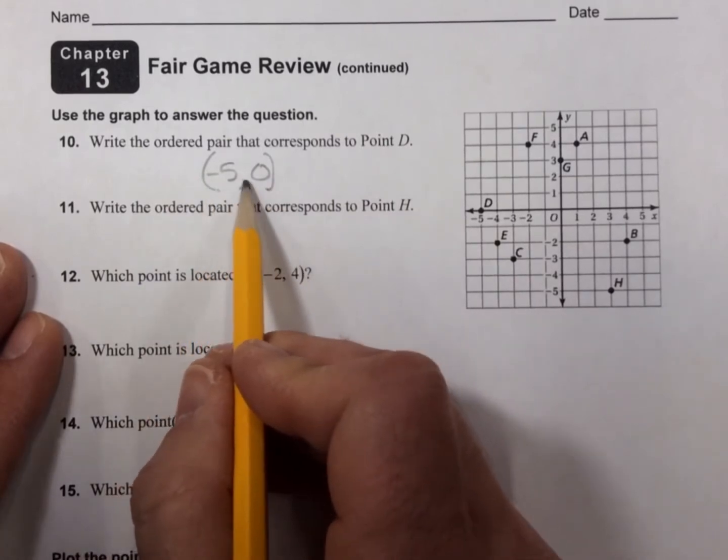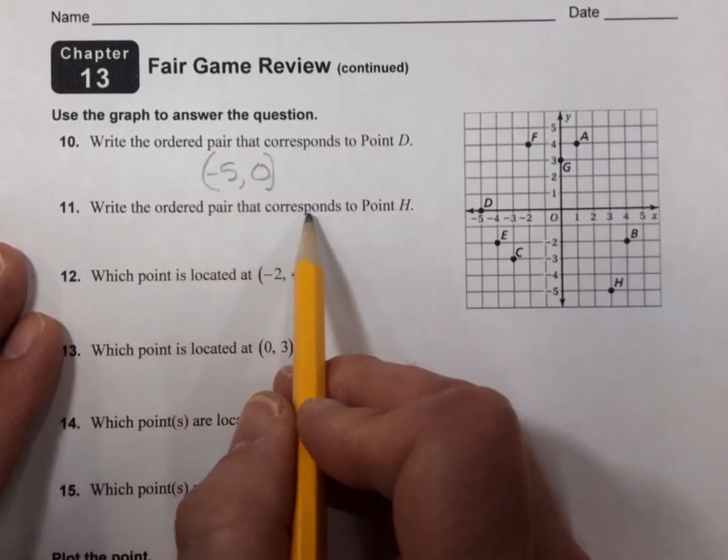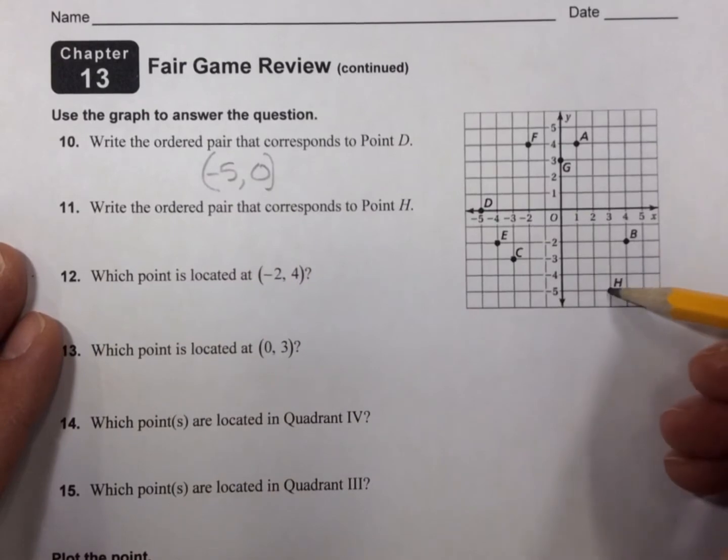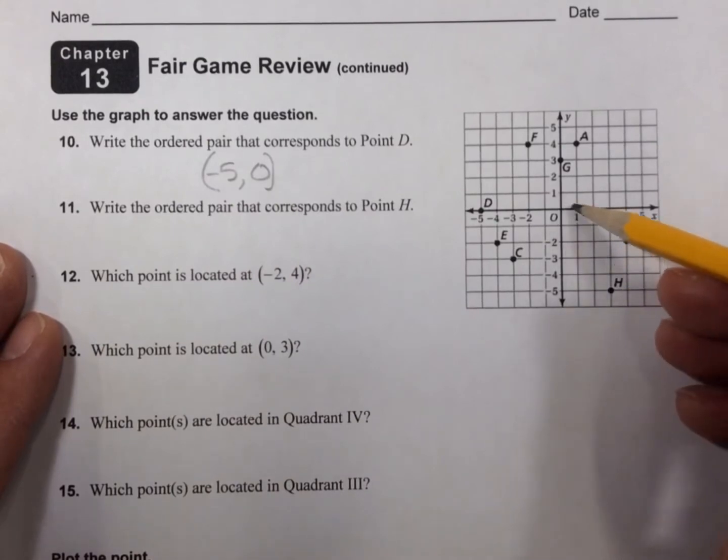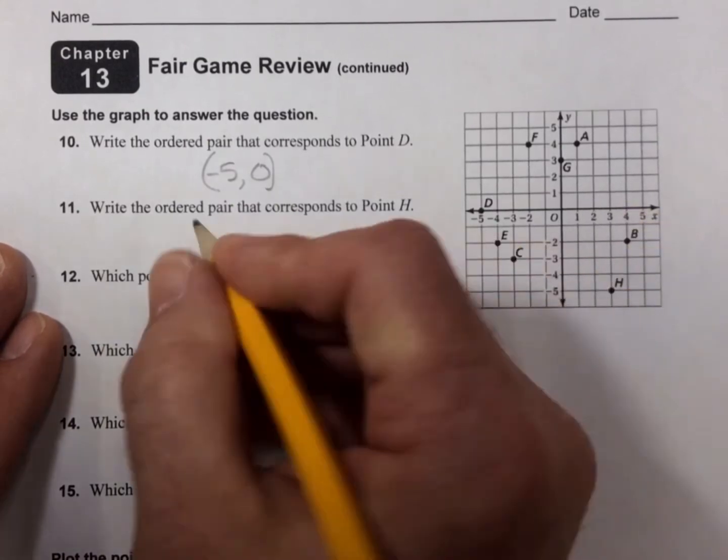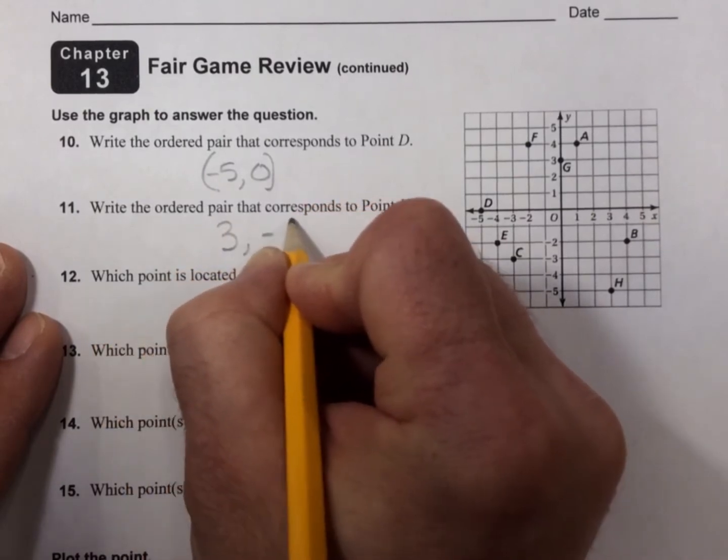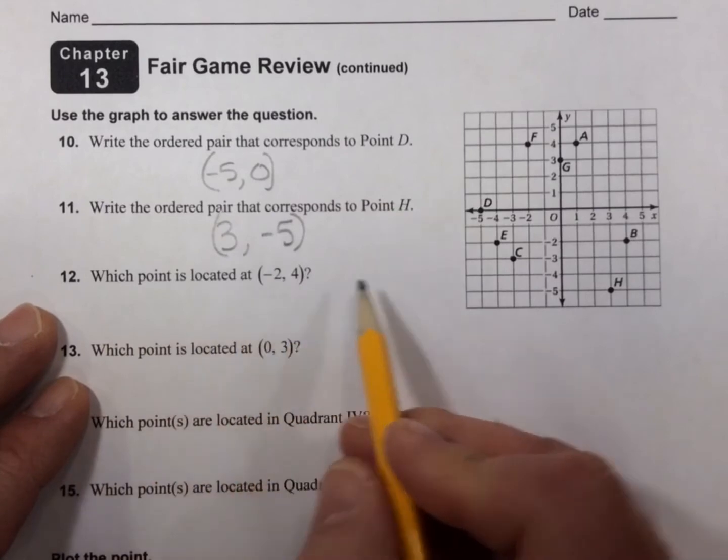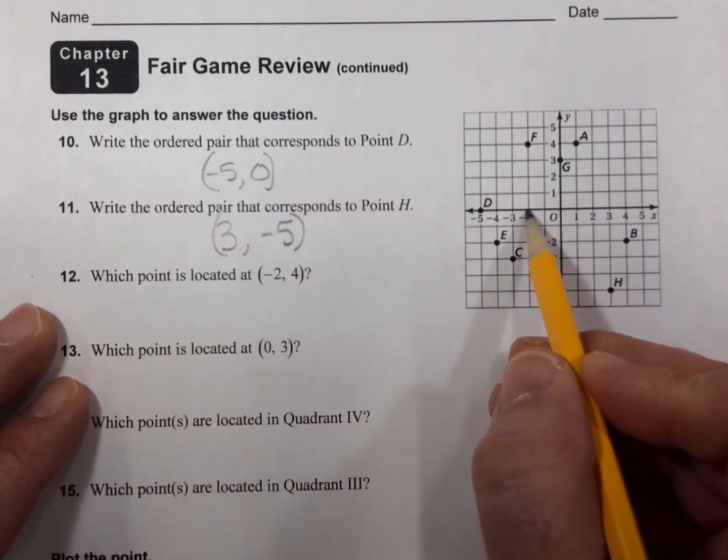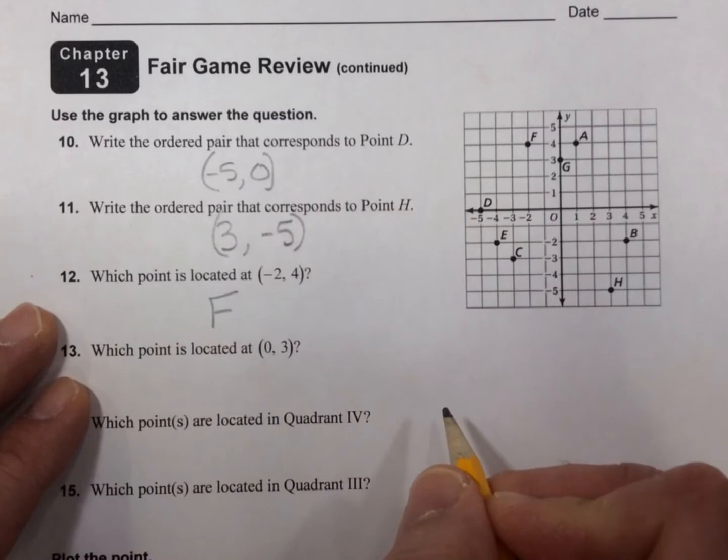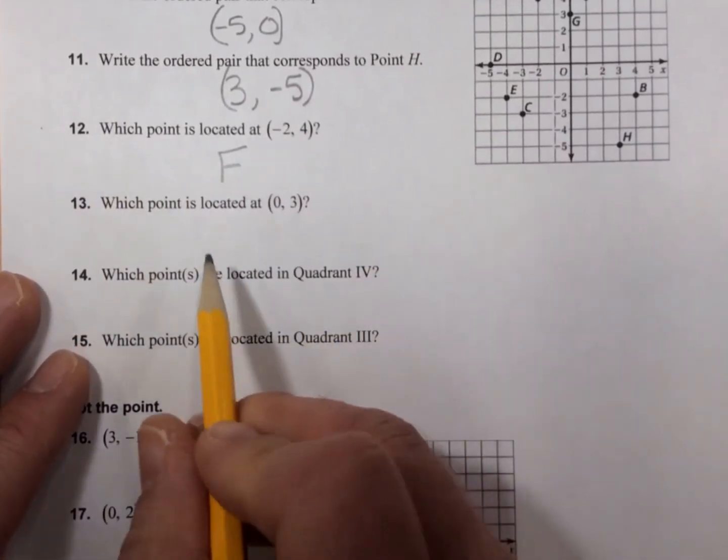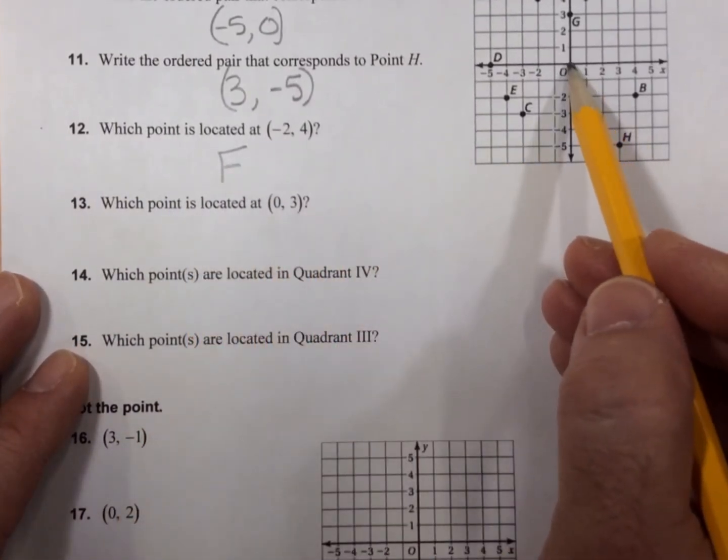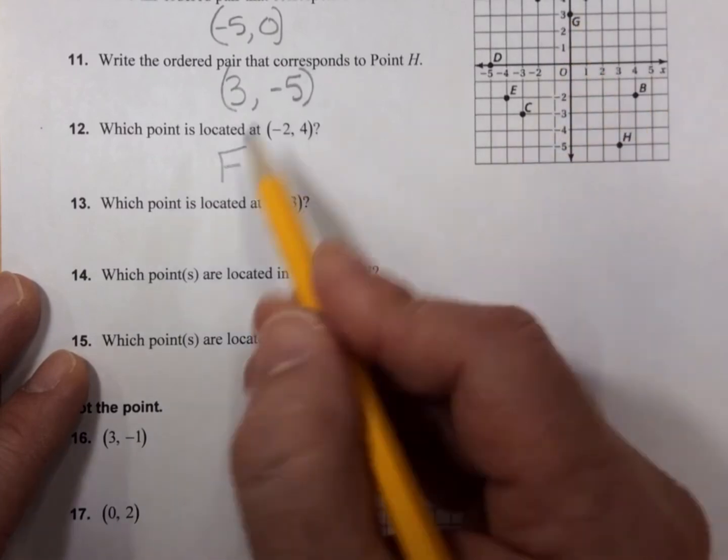Remember, you have to put them in parentheses, separated by a comma. Write the ordered pair that corresponds to point H, right down here. So that is (3, -5). Which point is located at (-2, 4)? F. Which point is located at (0, 3)? G.